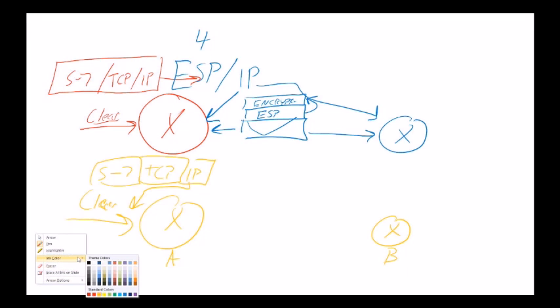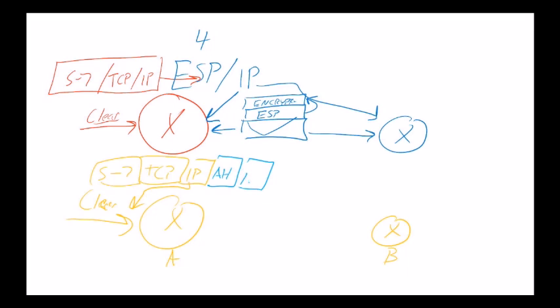What AH does is it adds a new header here, just like ESP did. We have a new IP header here. This IP header, just as before, is sourced from router A, destined to router B over there on the right. What authentication header does that ESP does not is its integrity check includes the outer IP header.